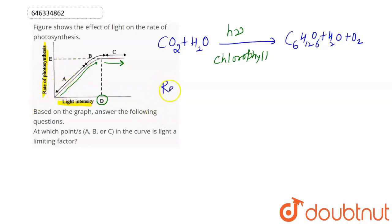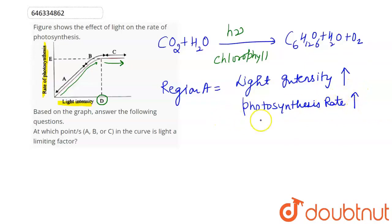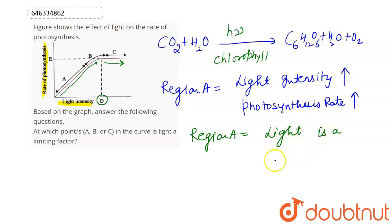At point A, we can see that as light intensity increases, the photosynthesis rate also increases. This means photosynthesis rate is dependent on light intensity at this point. So we can say that at point A, light is acting as a limiting factor, because photosynthesis rate depends on the limiting factor.